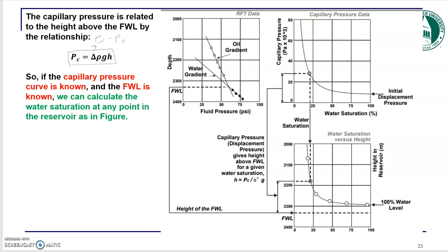You get this capillary pressure curve. This is the capillary pressure versus water saturation. The initial displacement pressure is here — that's the first pressure at which you can remove water from the sample. Let's assume this is your capillary pressure curve.